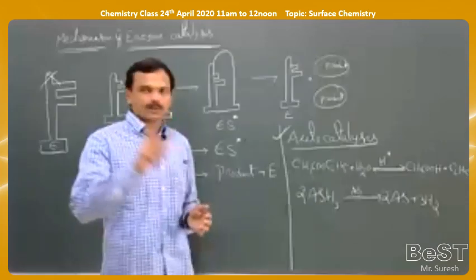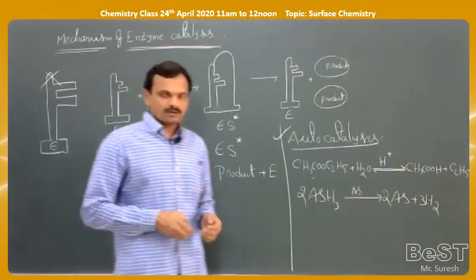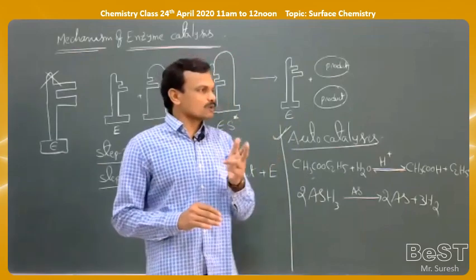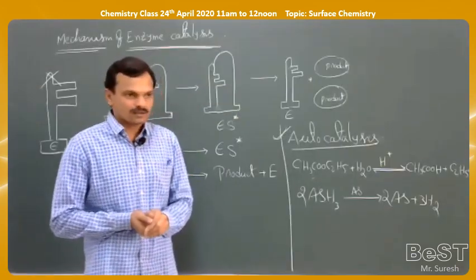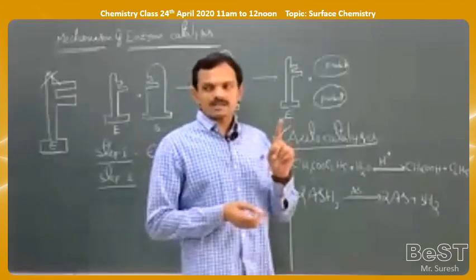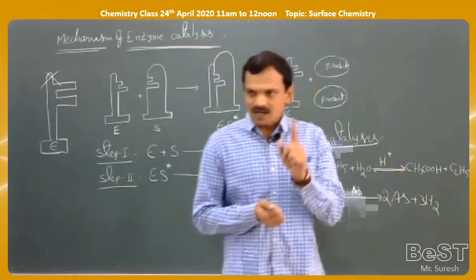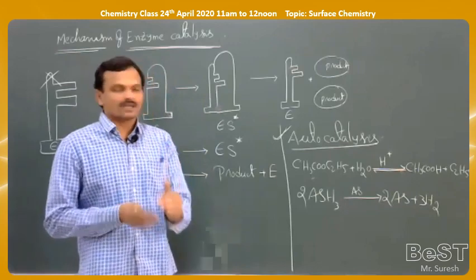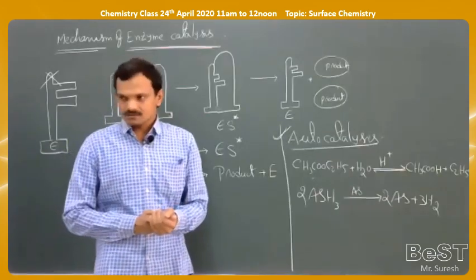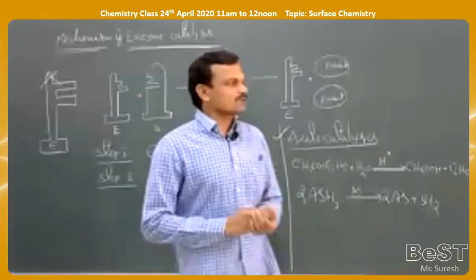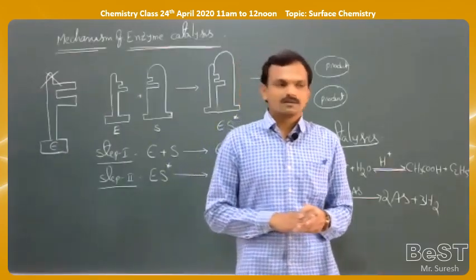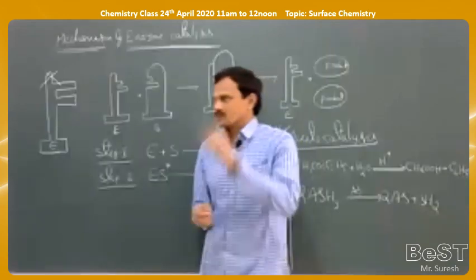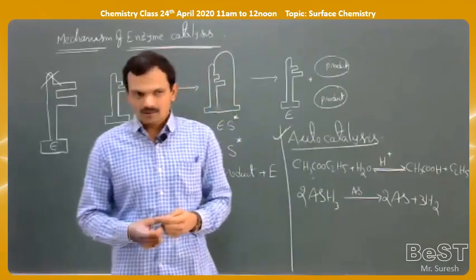Second application: manufacture of sulfuric acid by the Contact process. The main reaction is 2SO2 + O2 → SO3. First, sulfur burns in air to form SO2; SO2 combines with O2 to form SO3; then SO3 dissolves in water or sulfuric acid to produce further sulfuric acid. The reaction 2SO2 + O2 → SO3 is reversible, and V2O5 is used as catalyst.